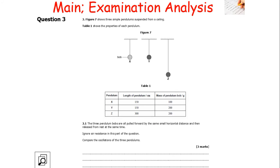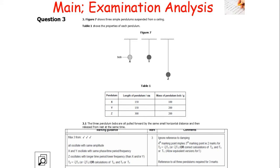Figure 7 shows three simple pendulums suspended from a ceiling. The three pendulums are pulled forward by the same small horizontal distance and released from rest at the same time - ignore air resistance. Pendulums X and Y have the same length, and since only length and gravitational field strength affect the time period, X and Y will have the same time period. Z has a longer length so it will have a longer time period. Since there is no air resistance and all are pulled back by the same amount, they all oscillate with the same amplitude.